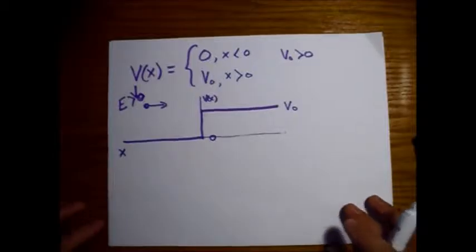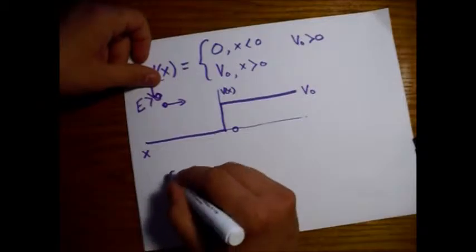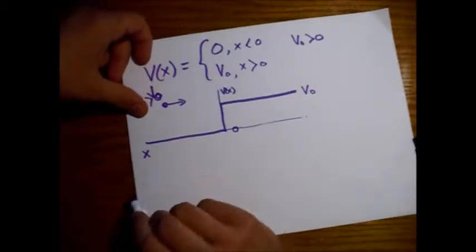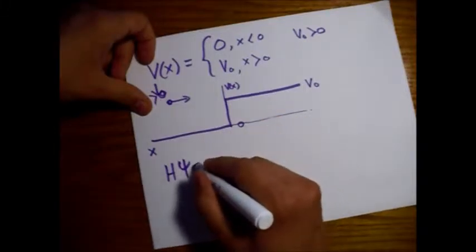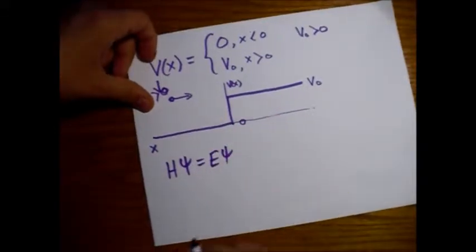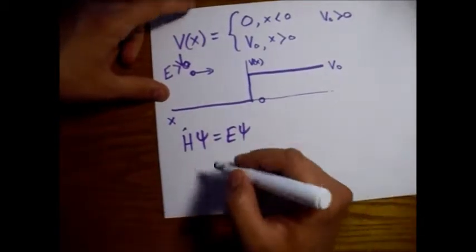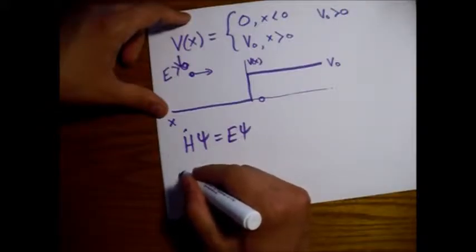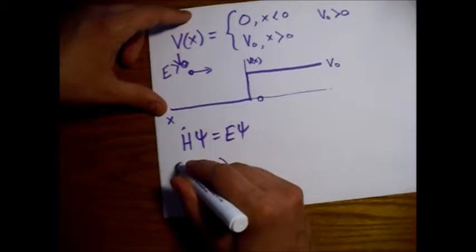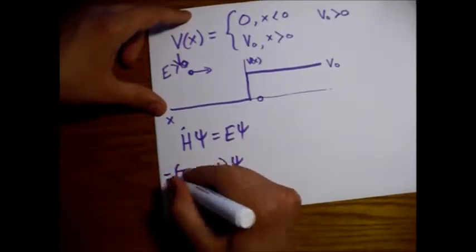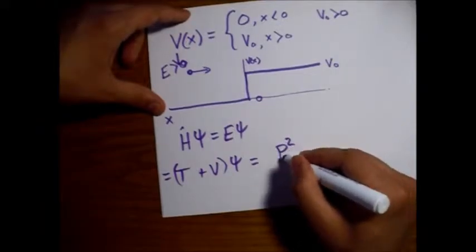We're going to look at Schrödinger's equation for this. The time-independent Schrödinger equation tells us that the Hamiltonian applied onto the wave function gives us the energy — there's a little hat on this, that's an operator. The Hamiltonian is kinetic energy plus potential energy, and kinetic energy is p-squared over 2m.